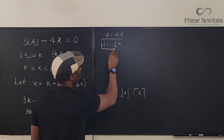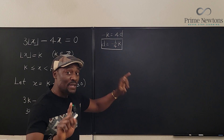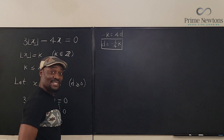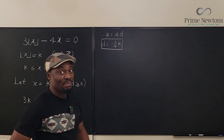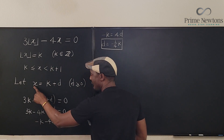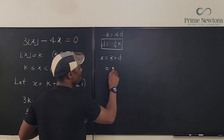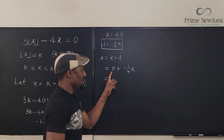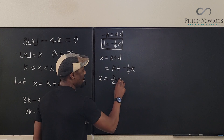Now we know d equals negative k over 4. Since d is the fractional part, d is greater than or equal to zero. If d is non-negative and d equals negative k over 4, then k must be non-positive. Substituting back, x equals k plus d, which is k plus negative k over 4, giving us x equals three-fourths of k.